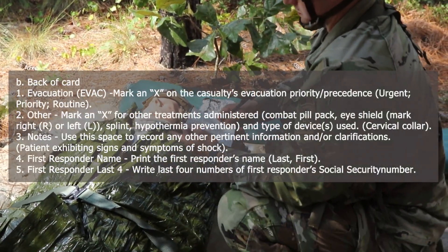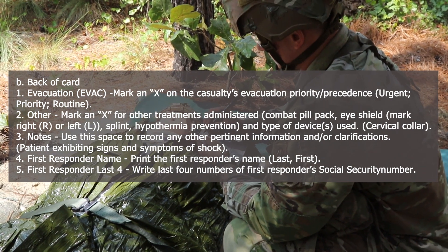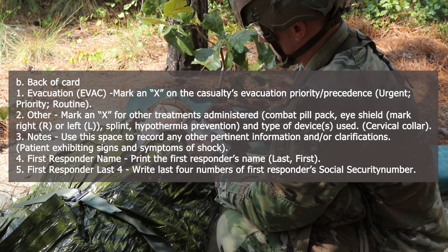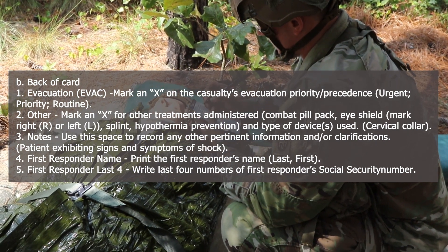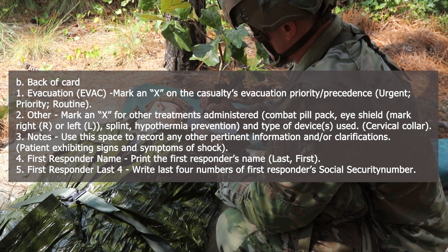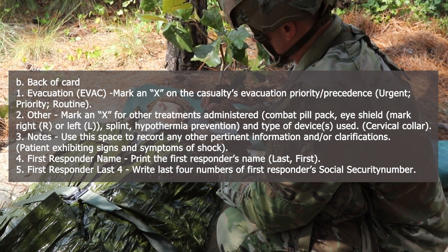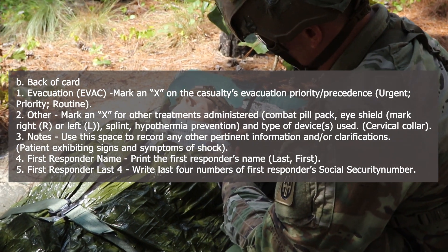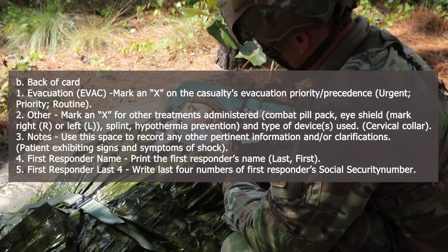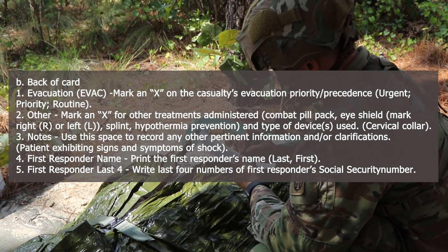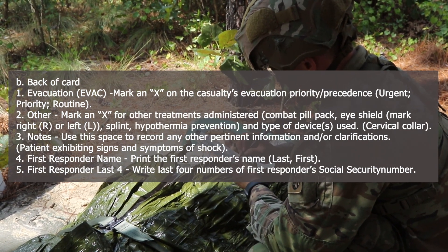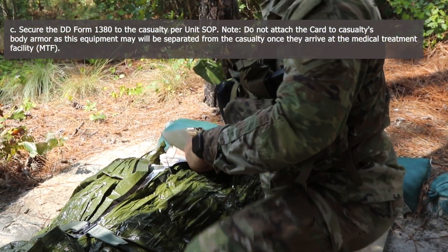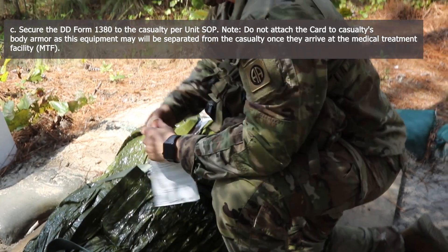On the back of the card: Evacuation — mark an X on the casualty's evacuation priority and precedence. Urgent. Other: mark an X for other treatments administered. First responder name: print the first responder's name. First responder's last four: write the last four numbers of the first responder's social security number. Secure the DD Form 1380 to the casualty per unit SOP on the right hand.